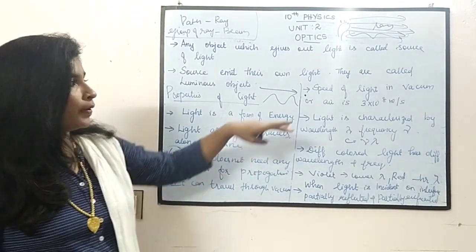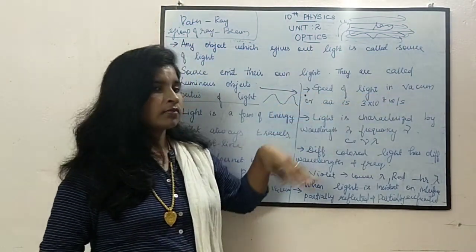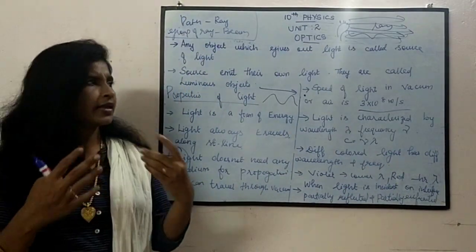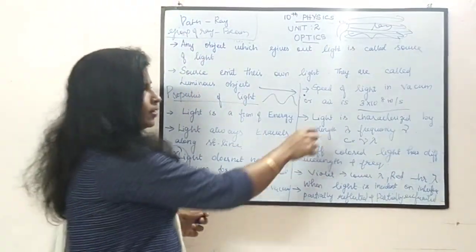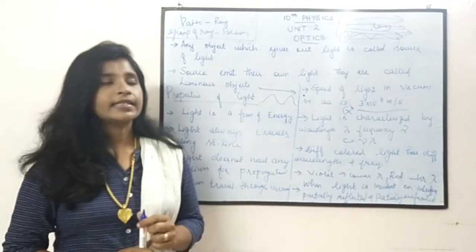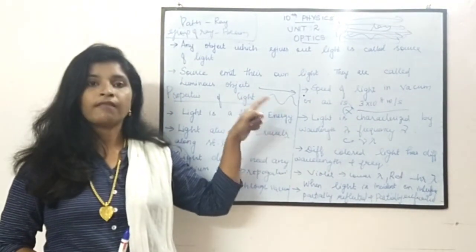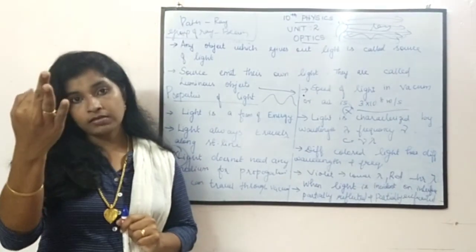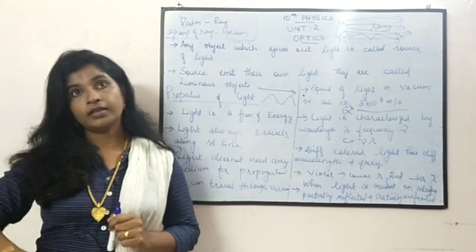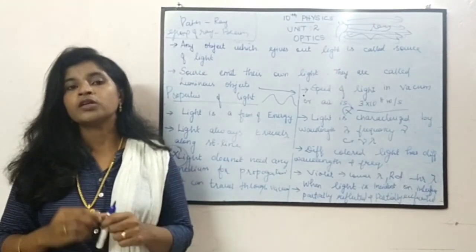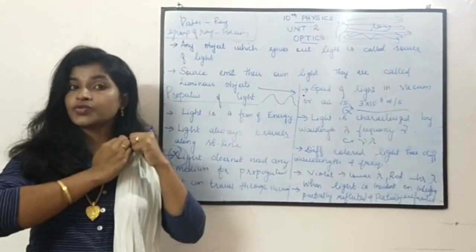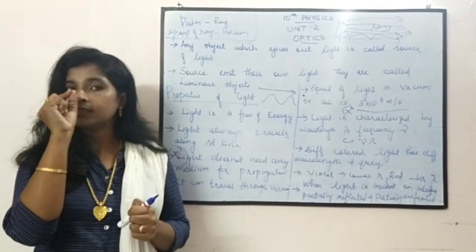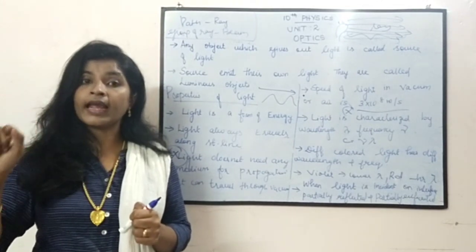The next property is the speed of light in vacuum or air. It is 3 × 10⁸ meter per second. You might have studied this. This is very, very important. What is the speed of light? It is 3 × 10⁸ meter per second. In 1 second it is travelling 3 × 10⁸ meters.